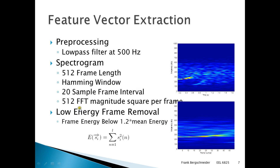The energy for each frame is computed as the squared magnitude of the samples in a given frame. Any frame below 1.2 times the mean energy of the total signal is considered silence or noise and removed. In this figure, you can see an unprocessed spectrogram, and the below figure is the same spectrogram with the silent period removed.